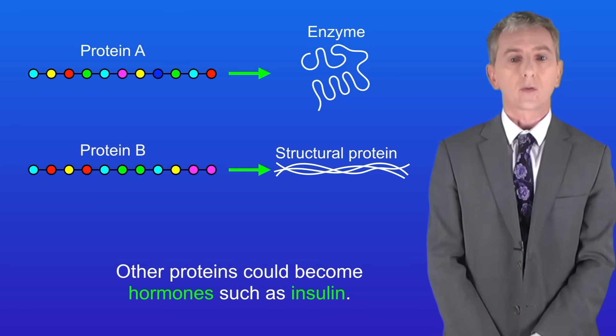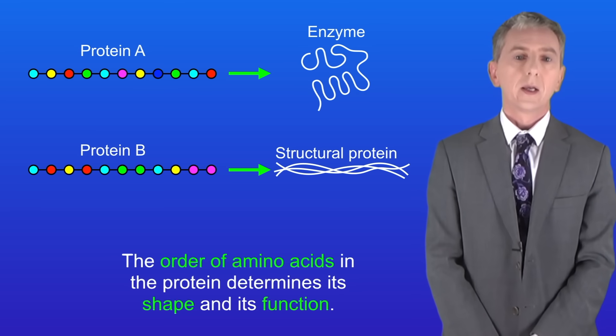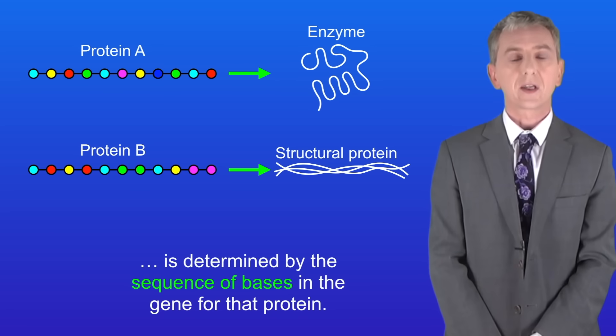So as we've seen, the order of amino acids in the protein determines its shape and its function. Now the key fact is that the order of amino acids in a protein is determined by the sequence of bases in the gene for that protein.